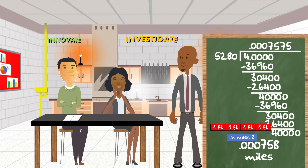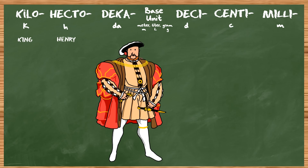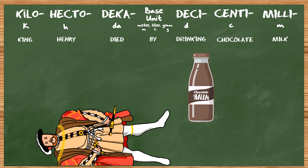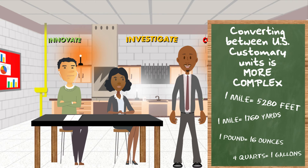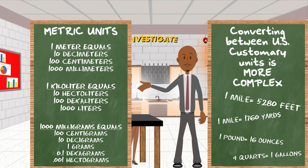I actually appreciate that. Me too. Converting between U.S. customary units is actually more complex — it requires memorization of or research of conversion factors, which tend to be strange and arbitrary numbers. This can be done, and we actually do have a lesson coming up on that, but if you had to pick, which one would you rather use — metric or U.S. customary units for conversion?